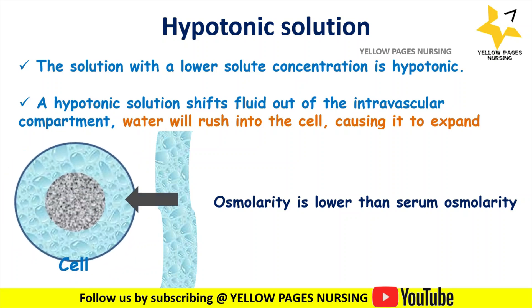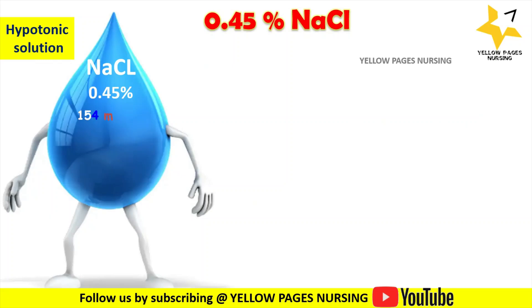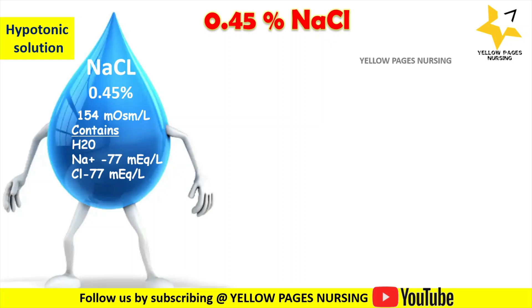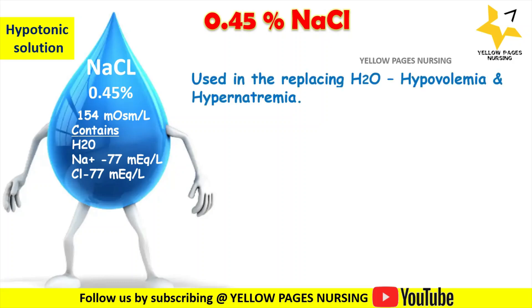The first example of a hypotonic solution is 0.45% Sodium Chloride, also known as Half-Normal Saline or Half NS. Its osmolality is 154 milli-osmol per liter, containing water, sodium, and chloride in equal proportions at 77 milli-equivalent per liter. It is mainly used to replace water in patients with hypovolemia and hypernatremia.